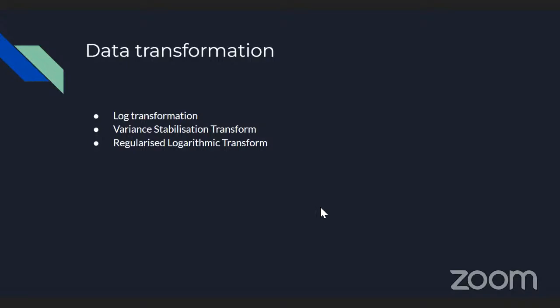For example, if you take person A, prep a library, sequence it, and then the same library is resequenced on another platform, that's a technical replicate. RNA-seq counts are very platform-specific and there might be a batch effect due to platform or library preparation. In differential analysis, we want to use biological replicates — at least three or more per condition. For tumor versus normal, you'd want at least six samples with three representing each condition.